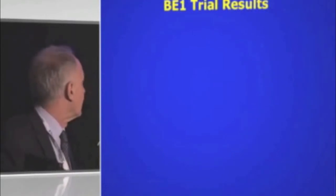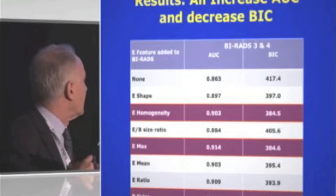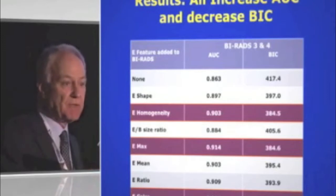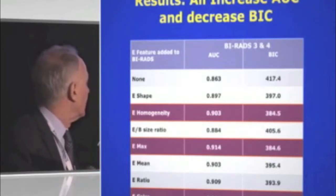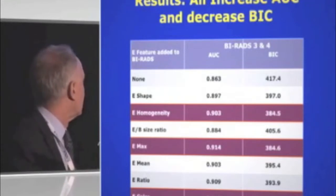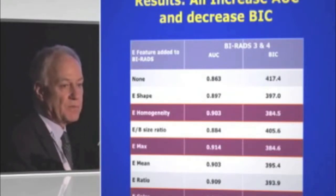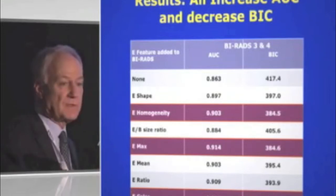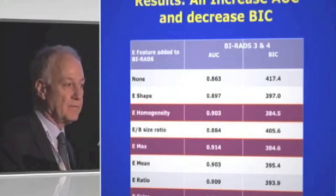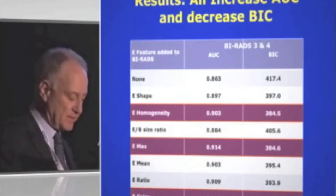For the main trial, we looked at areas under the curve using a Bayesian goodness-of-fit measurement. BIRADS on B-mode alone was about 86%. Every one of the added SWE features improved the area under the curve—none made it worse. The best improvement came from adding the color feature, choosing green or below for benign and yellow and above for malignant.